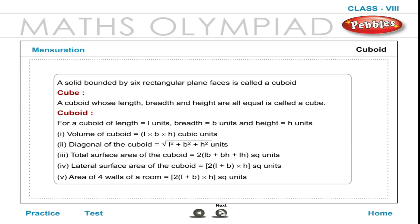2. Diagonal of the cuboid = √(L² + B² + H²) units. 3. Total surface area of the cuboid = 2(LB + BH + LH) square units. 4. Lateral surface area of the cuboid = 2(L + B) × H square units. 5. Area of four walls of a room = 2(L + B) × H square units.